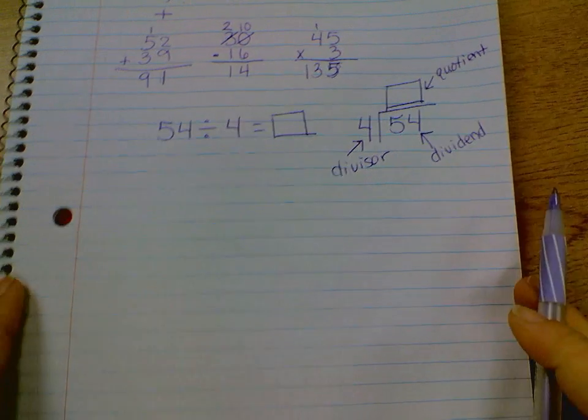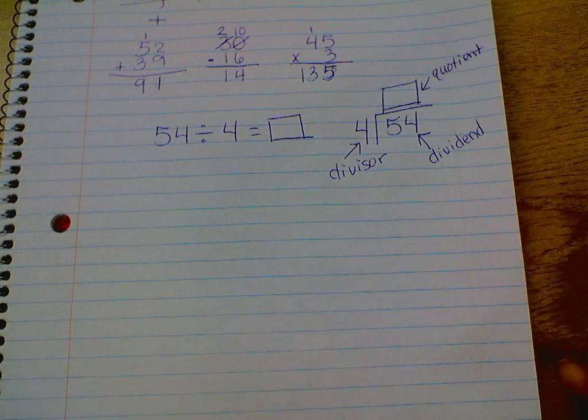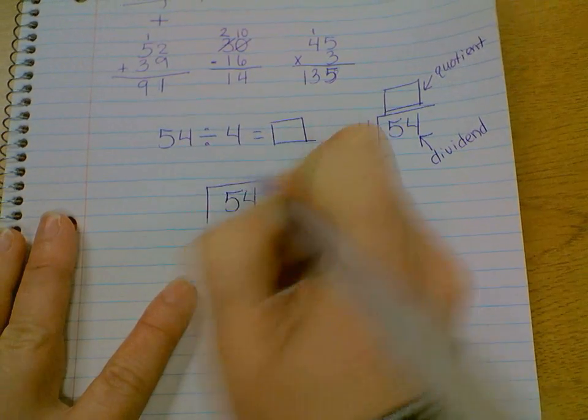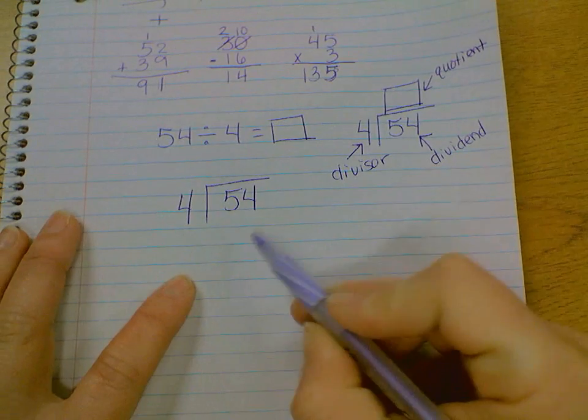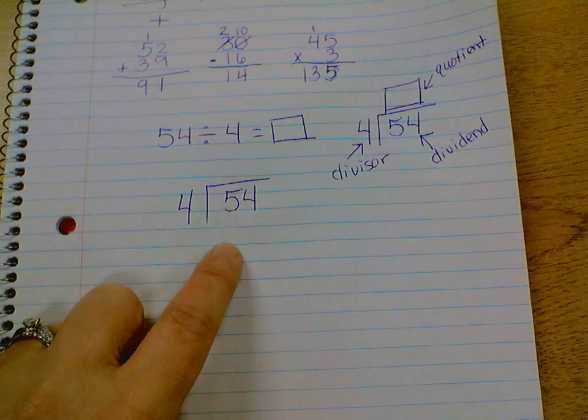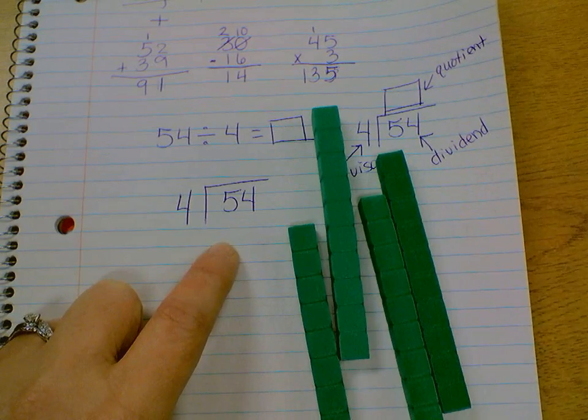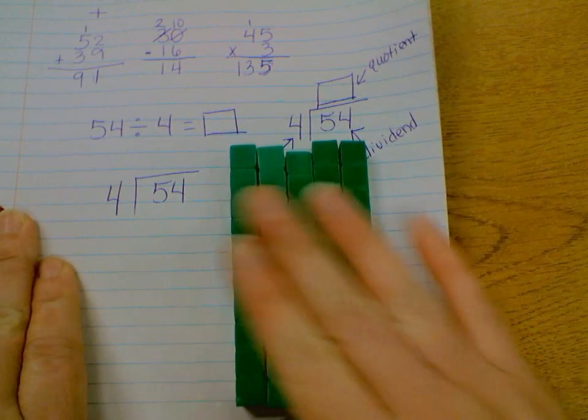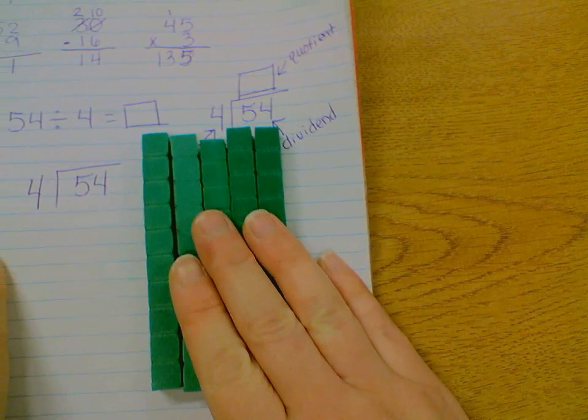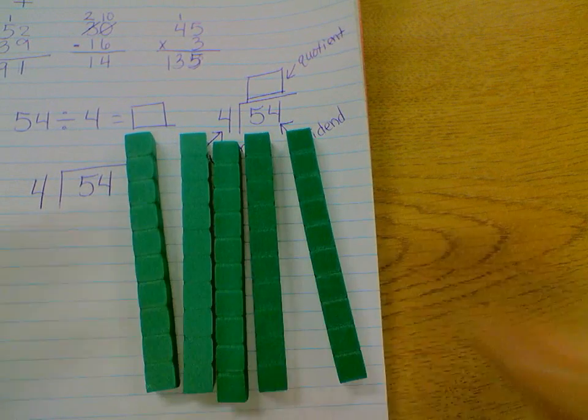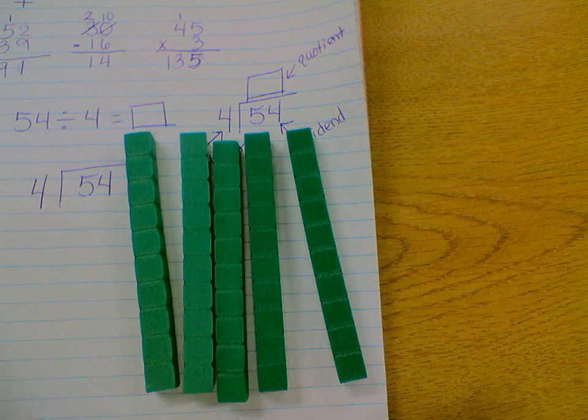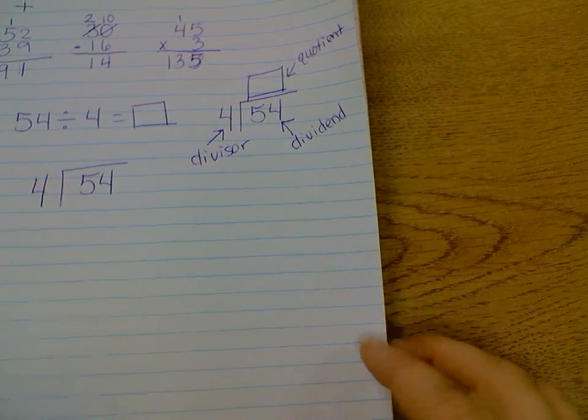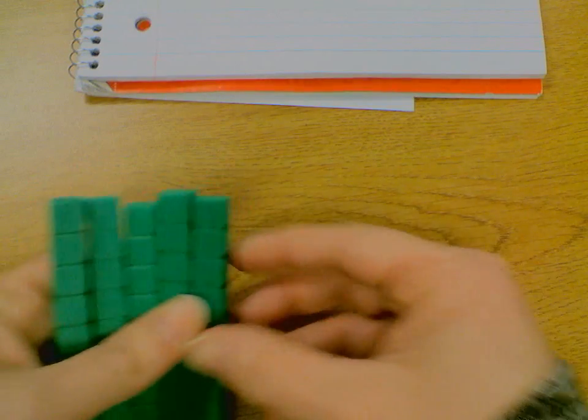So we are going to first figure out for 54 divided by 4, we're going to take that 5 in the tens place there. So we have 5. I'm going to squeeze that over there. There we go. 5 tens. I need to divide those 5 into 4 equal groups. So here we go. I'm going to move this out of the way for those of us who need the visual. Here we go. 4 groups. 1, 2, 3, and 4.